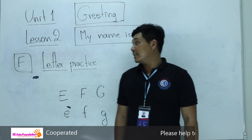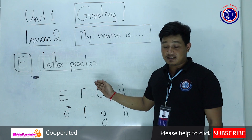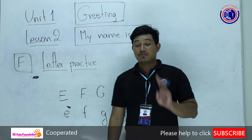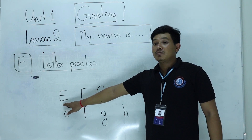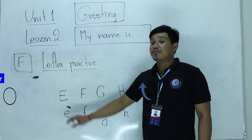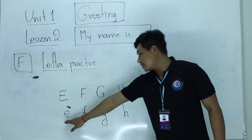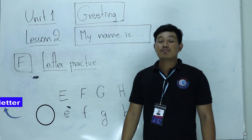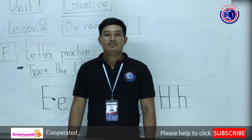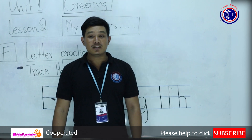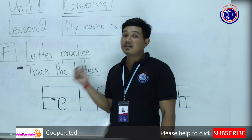Now move to Part F: Letter and practice. In English we have two kinds of letters. This one we can call it capital letter or big letter, and this one we call it small letter. Now move to Part F: Letter practice. Trace the letters.